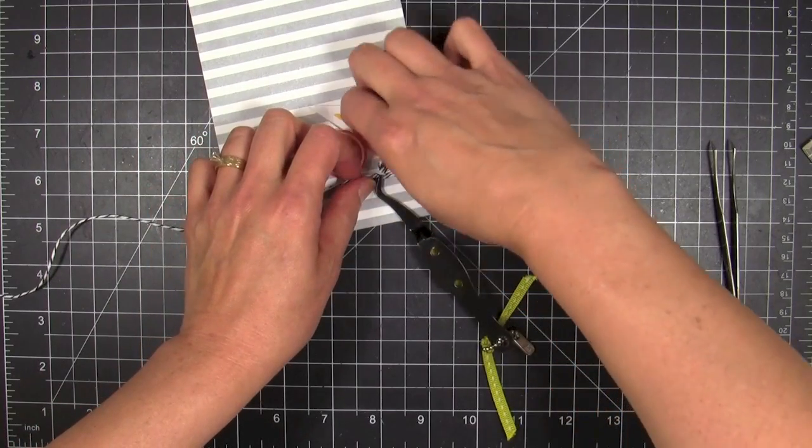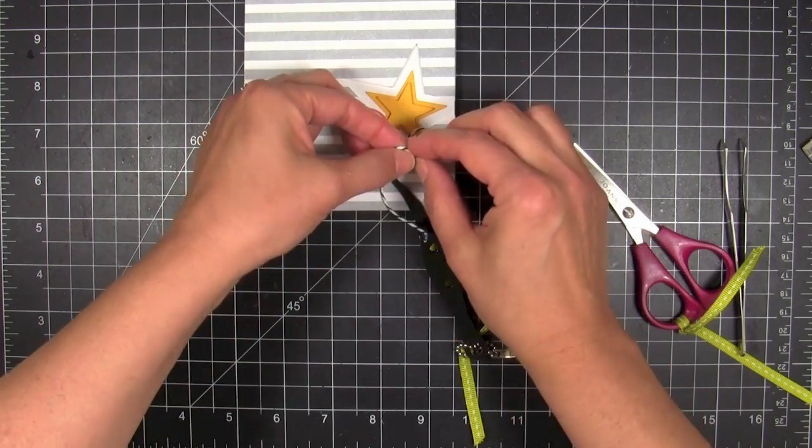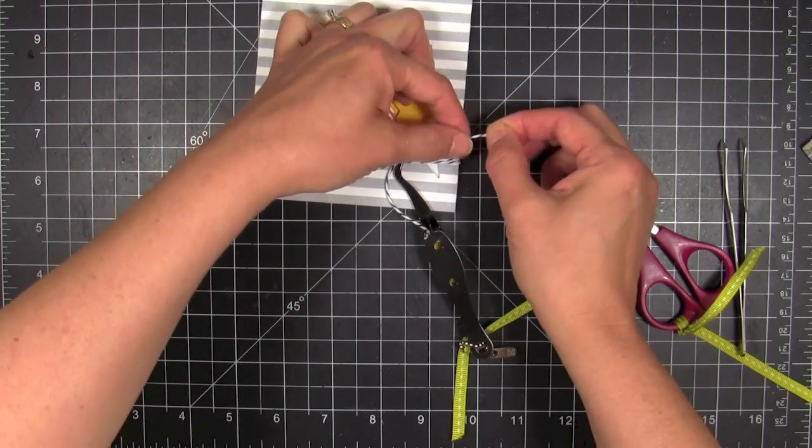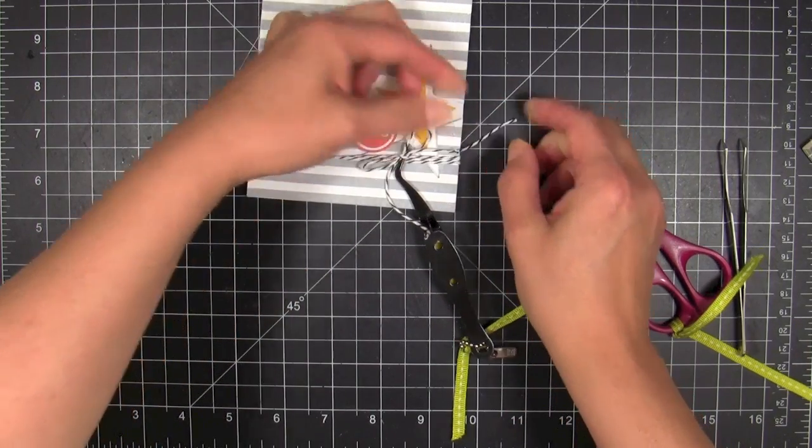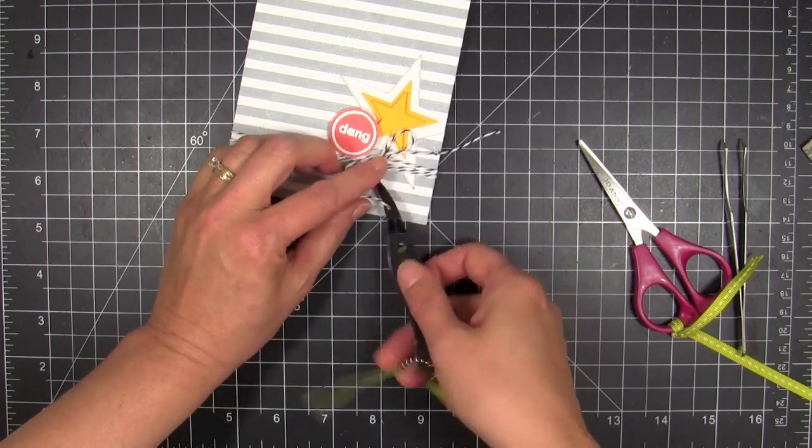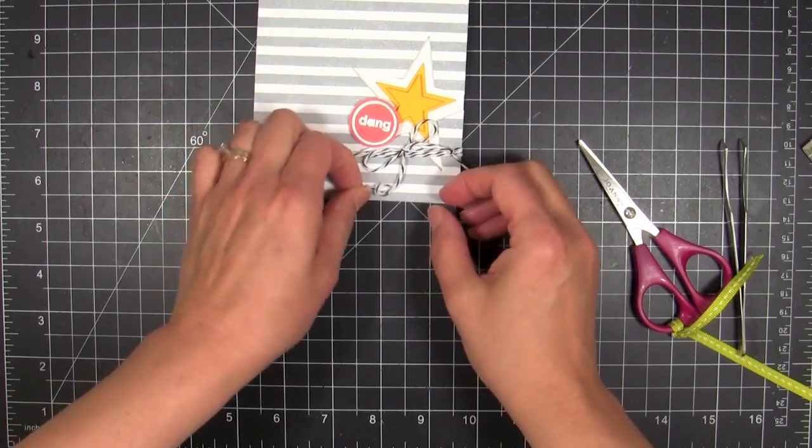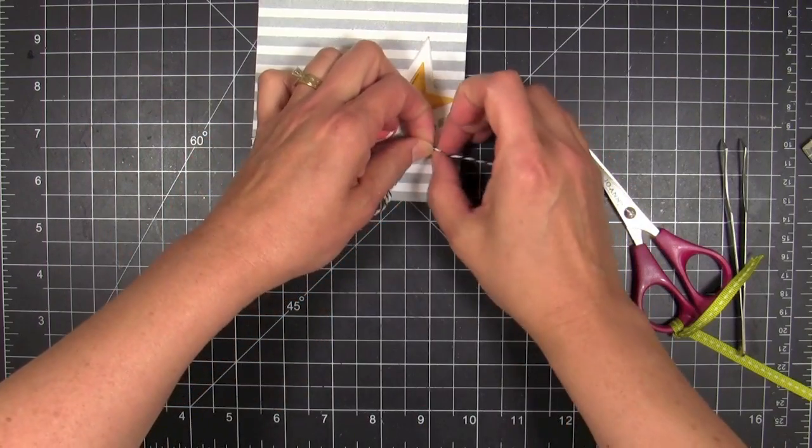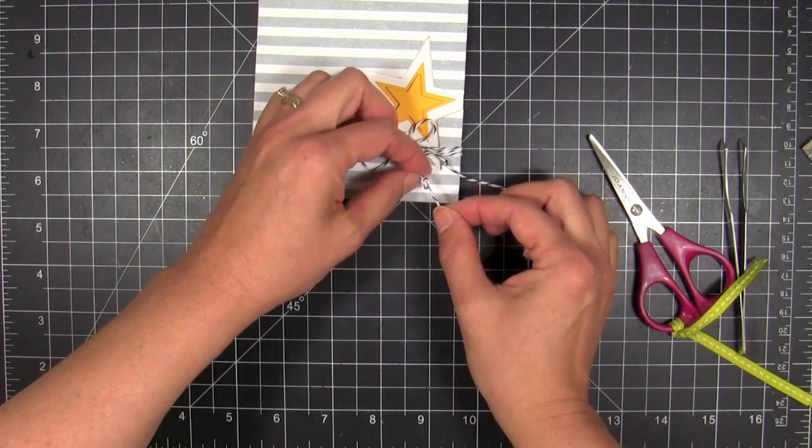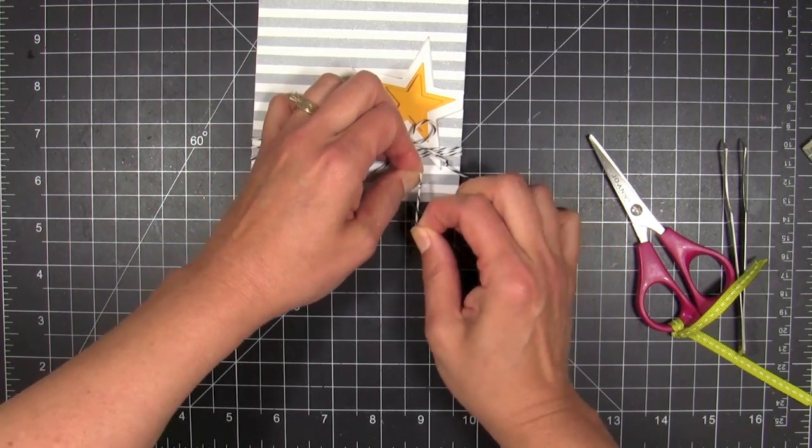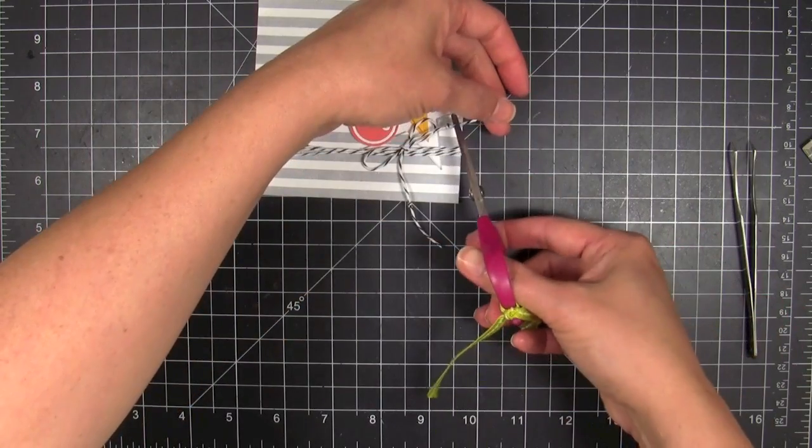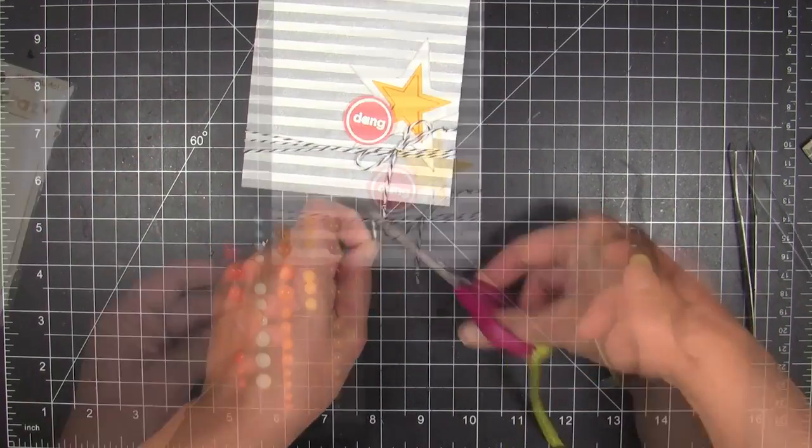We'll get that cinched up nice and tight. Another thing that I like to do, because yes I'm a glutton for punishment, I like to knot the ends of my twine sometimes because sometimes it starts to fray. I just like it and I think it's fun, so I do it sometimes. Certainly not a necessary step, just for fun. Then we'll get those trimmed off really quick.